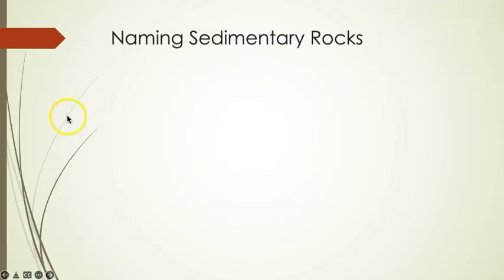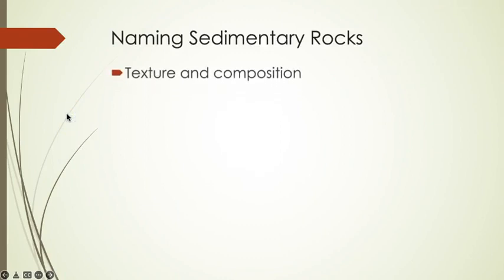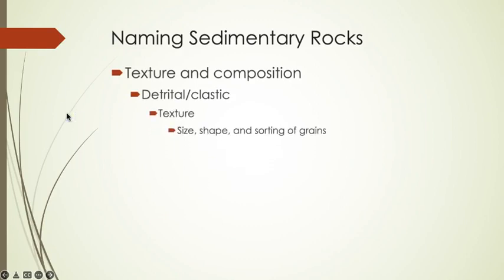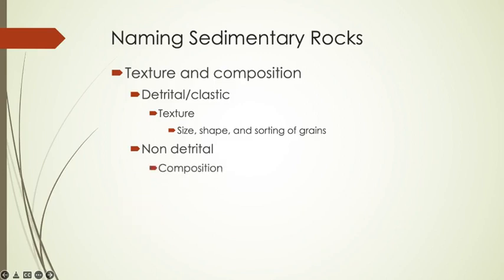Like igneous rocks, sedimentary rocks are named according to their texture and composition. For detrital sedimentary rocks, the texture is controlled by the size, shape, and sorting of the grains. Non-detrital rocks do not contain grains, and therefore grains are not considered. Instead, composition is the primary criteria used.